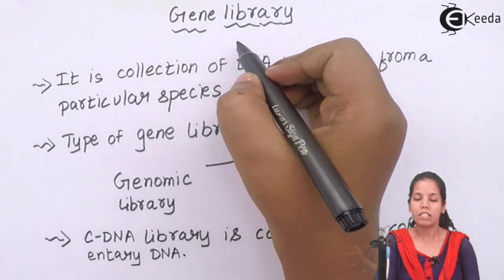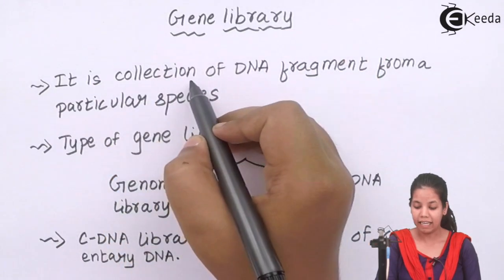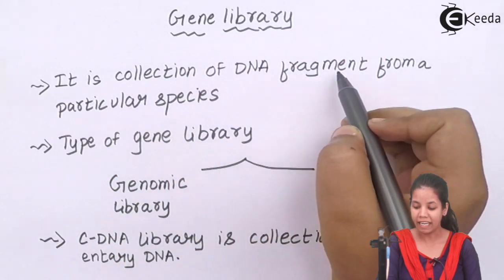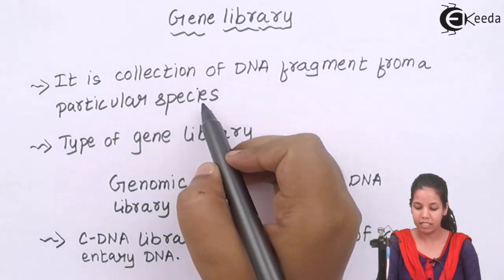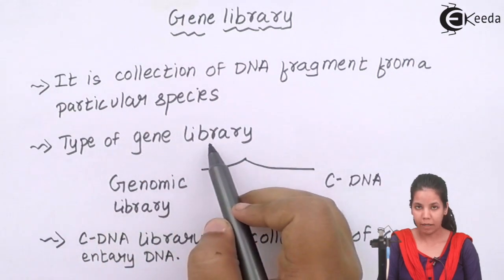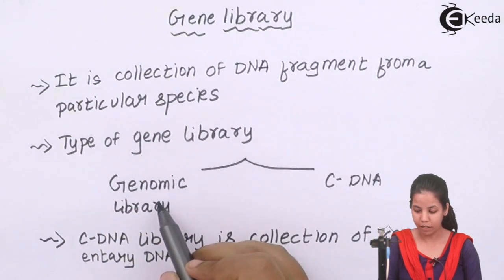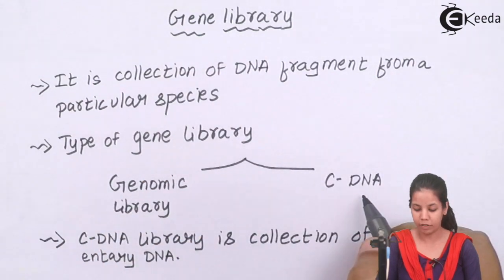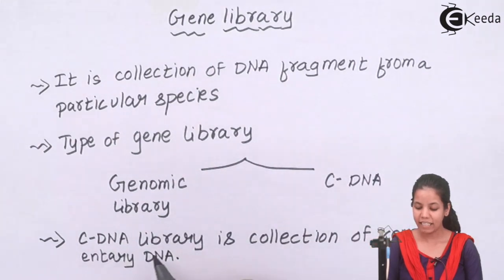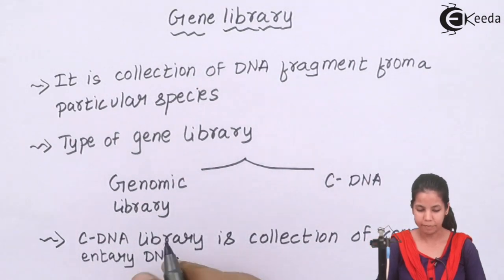Let us review: a gene library is the collection of DNA fragments from a particular species. Types of gene library include the genomic library and the cDNA library. A cDNA library is a collection of complementary DNA.